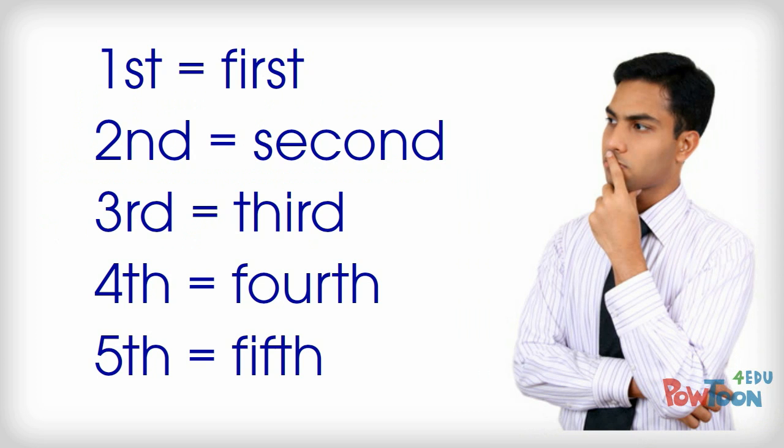Why do we spell 1st, 2nd, 3rd, 4th, 5th, etc. like this? Where do the little letters come from? Do you know?